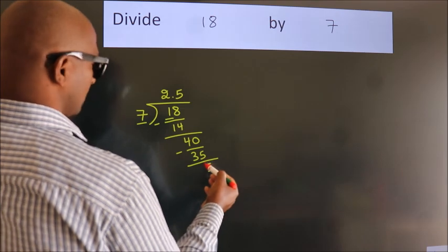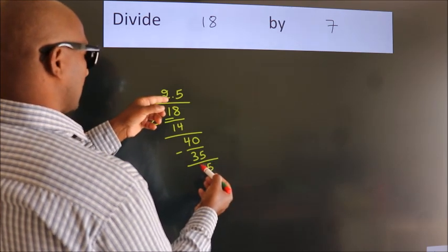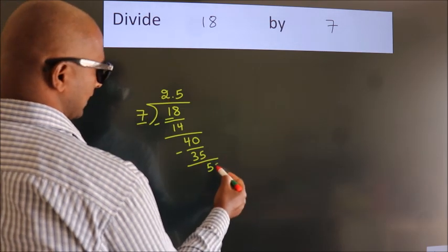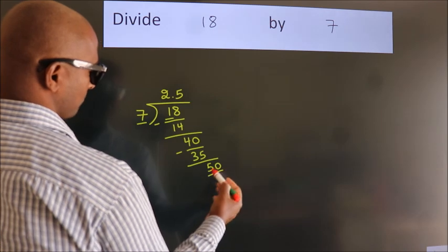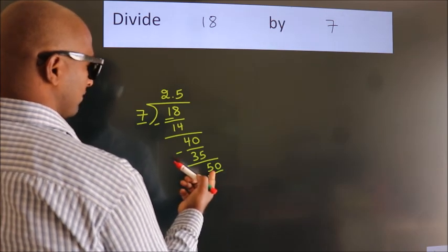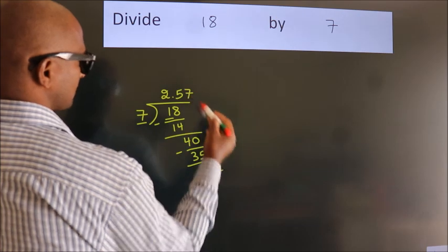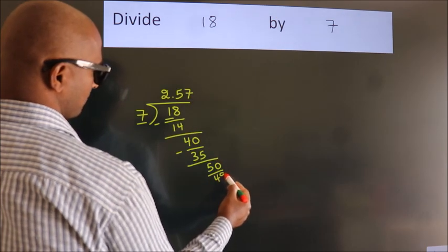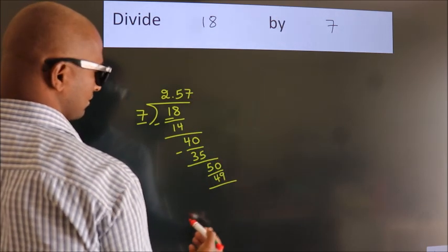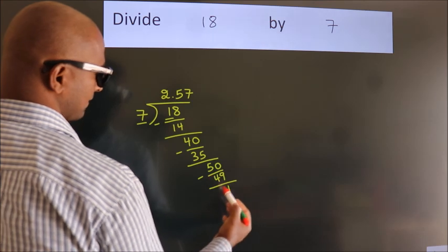After this, we already have the decimal. So directly take 0. So 50. A number close to 50 in 7 table is 7 sevens, 49. Now we subtract. We get 1.